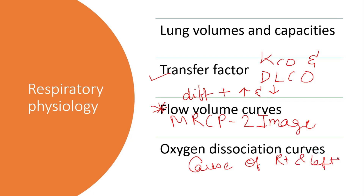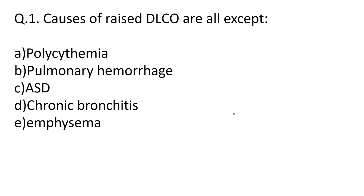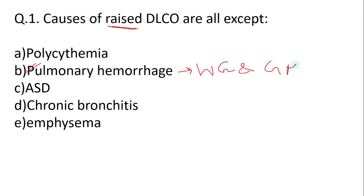Now let's look at an MRCP style question from the topic of respiratory physiology. Read this question very carefully and try to answer it before looking at the solution. The reason I have included this question is because I want you to be aware of the causes of a raised DLCO. We all know that pulmonary hemorrhage is a very important cause of raised DLCO, and the common causes of underlying alveolar hemorrhage would be granulomatosis with polyangiitis and Goodpasture's syndrome.